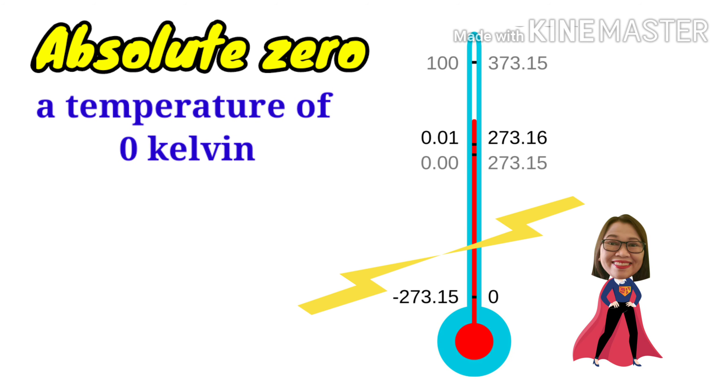On the Kelvin scale, another reference point is absolute zero. Absolute zero is the temperature of zero Kelvin. Absolute zero is defined as the point where no more heat can be removed from a system. According to the absolute or thermodynamic temperature scale, this corresponds to zero Kelvin or minus 273.15 degrees Celsius.